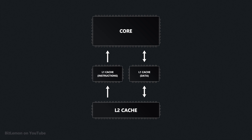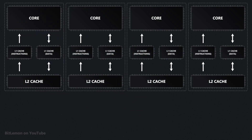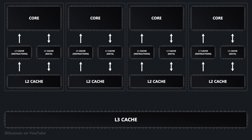The L2 cache is usually a unified cache, which means it can store both data and instructions. It is dedicated to a single processor core and can directly communicate with the L1 caches. But most modern systems are multi-core systems and need a fast way to share data between them — that's why CPUs usually have another cache: L3.